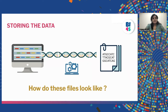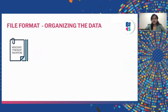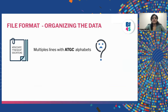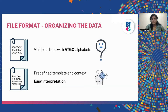In this lecture, we are going to see how exactly these files look like and how we are going to interpret them. We need to discuss why we need to organize this data into a particular format and why file formats are important. If a file has multiple lines of A, T, G, C alphabets listed without context, we get confused about how to interpret the data. Whereas, if a file gives us the sequence, which organism it is from, and the quality of the sequence in a predefined template, it becomes much easier to interpret. This is why we organize sequencing output into specific formats — for easier interpretation.